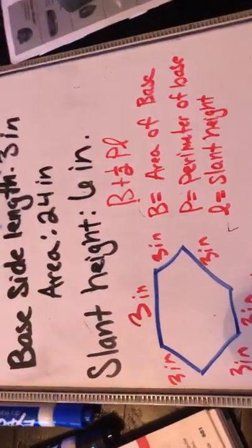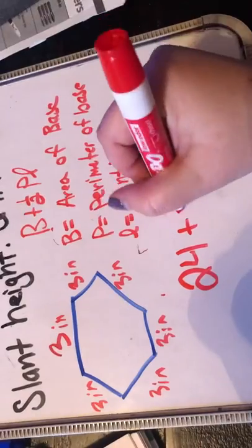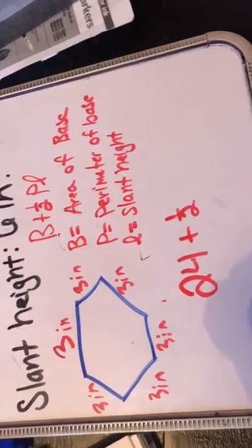The area of the base they gave you, so that is 24. Plus, we're going to add our half right there, the perimeter of the base.